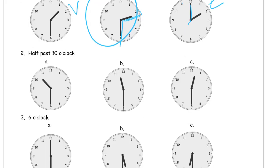Half past ten o'clock. Half past ten means that the hour hand is going to be after the ten. What comes after ten? Eleven. So it's going to be in between the ten and the eleven, right in the middle — halfway past the ten on its way to the eleven. And there's the minute hand pointing down at the six. So that's half past ten right there.